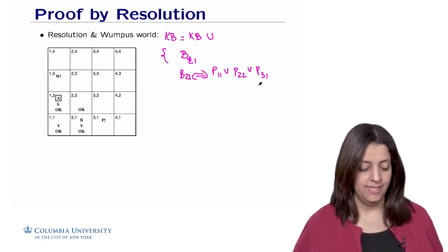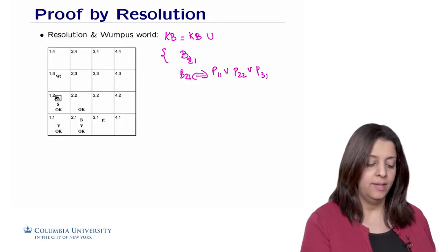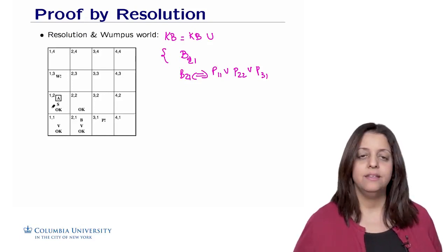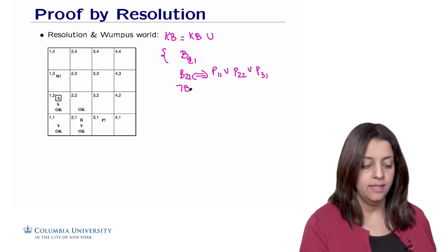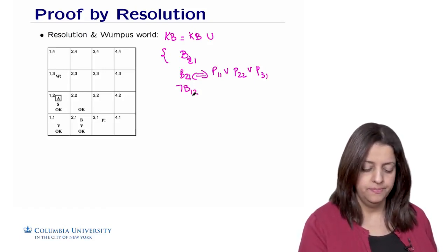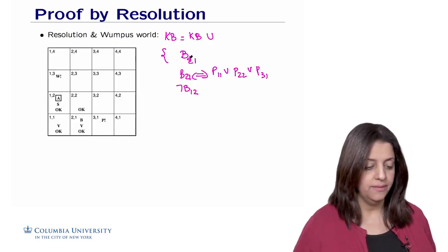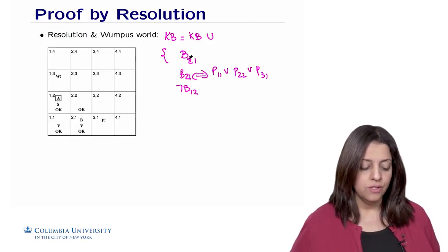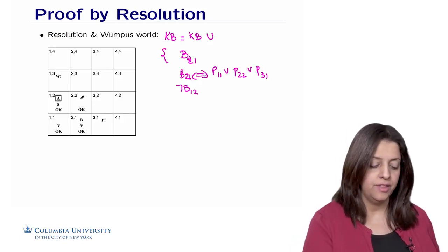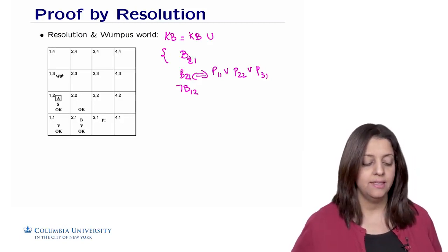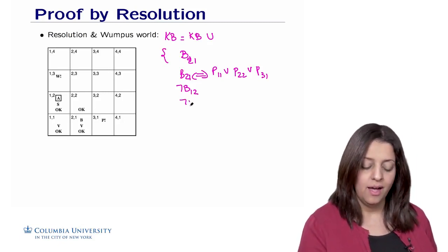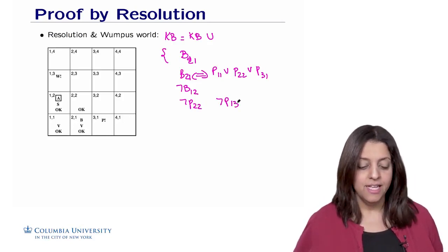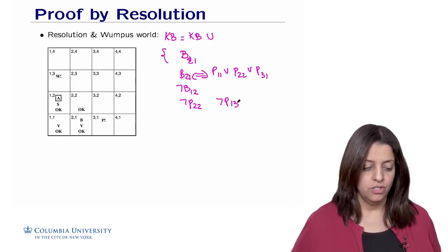This enriches the knowledge base. When the agent went to 1-2, it felt a stench but no breeze. So there is no breeze in cell 1-2. From this, we can also infer that there is no pit in 1-3 and no pit in 2-2, because if there were a pit in either of those cells, the agent would have felt a breeze at 1-2. This new fact also enriches the knowledge base.